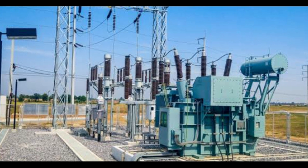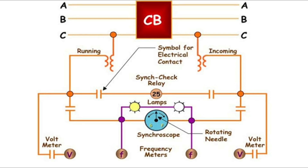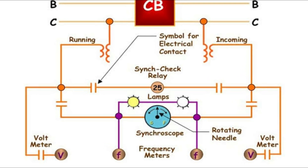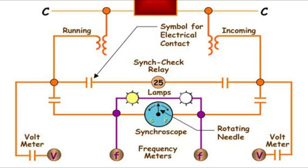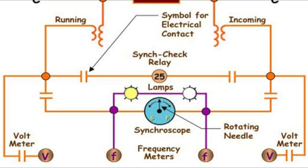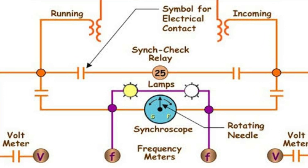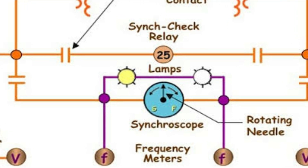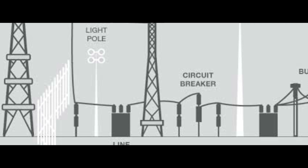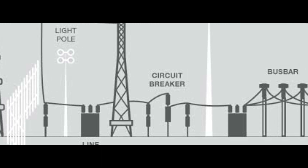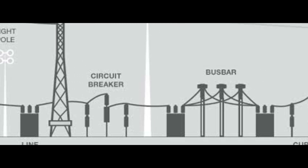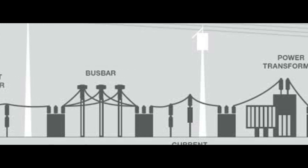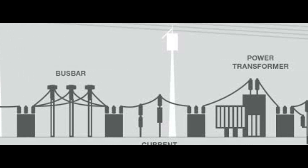When the power grid is connected with another power grid, this is called synchronization. First, one power plant is connected, and then all power plants are connected to the grid through the same procedure. This synchronization process is a standard and simple procedure.